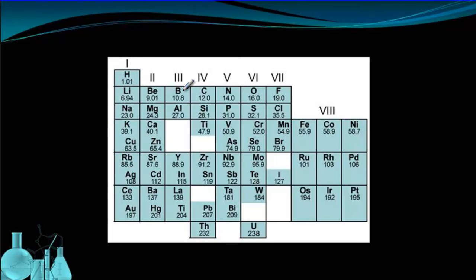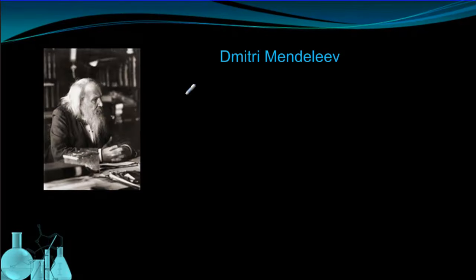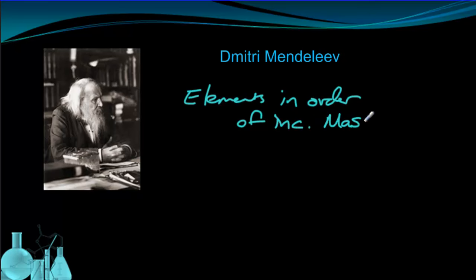So here's hydrogen, then lithium, then beryllium, boron, carbon, nitrogen, all in ascending order of mass. So let's get that down. Elements in order of increasing mass. So that's the first thing.